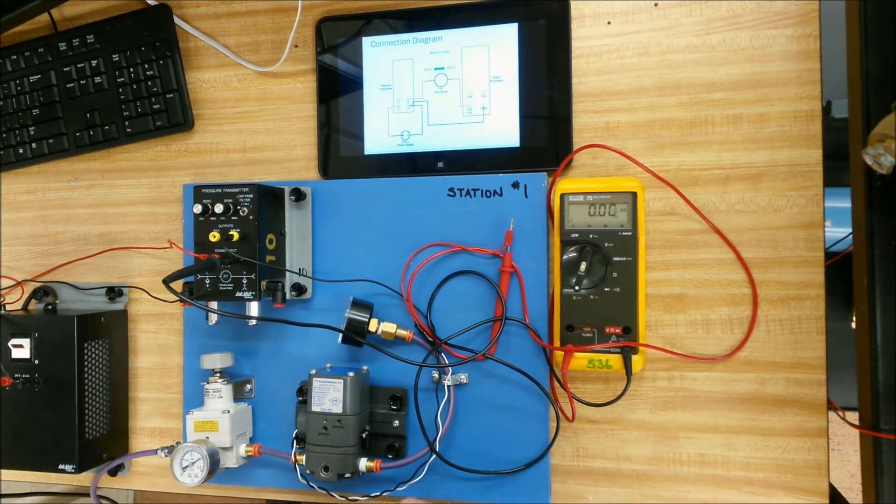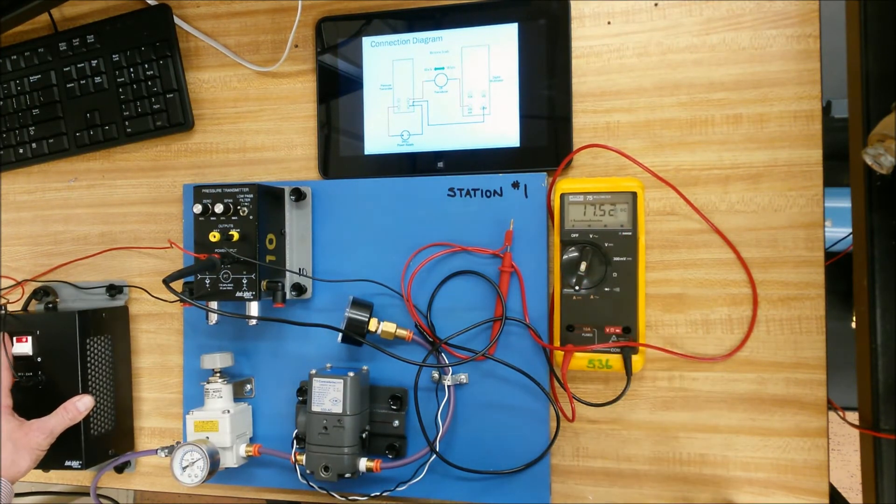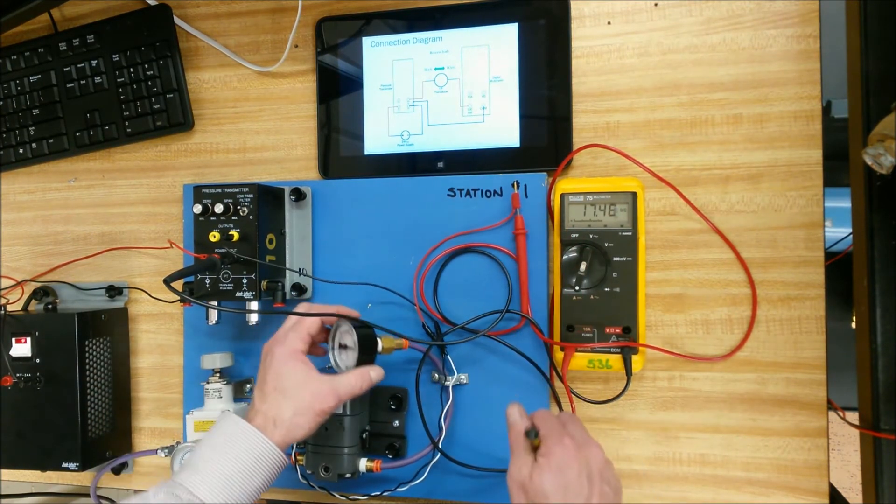So now that all that's on, I can now turn the current on. And at this point, there is 17.5 milliamps flowing in the circuit.